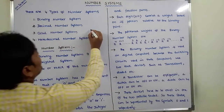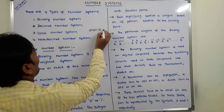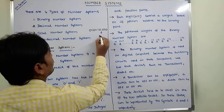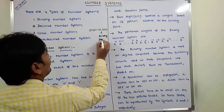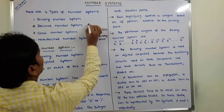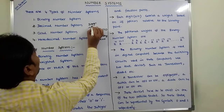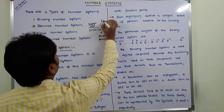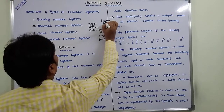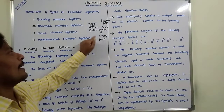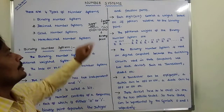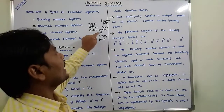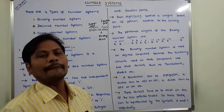For example, consider the binary number 00101010.010. The dot here is called the binary point. The part before the binary point is called the integer part, and the part after the binary point is called the fraction part.